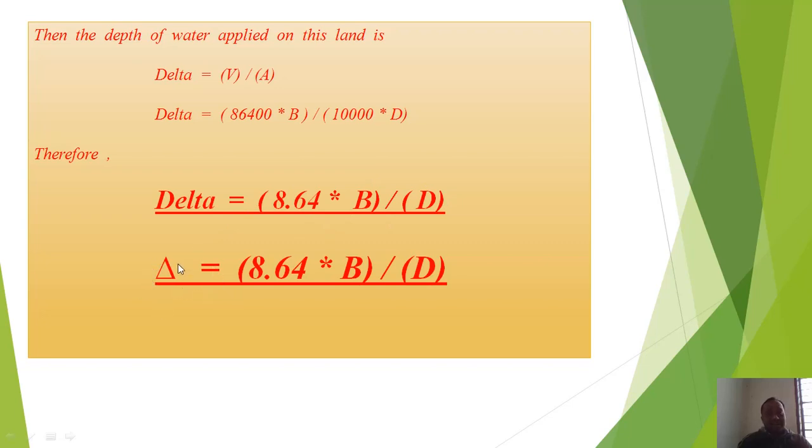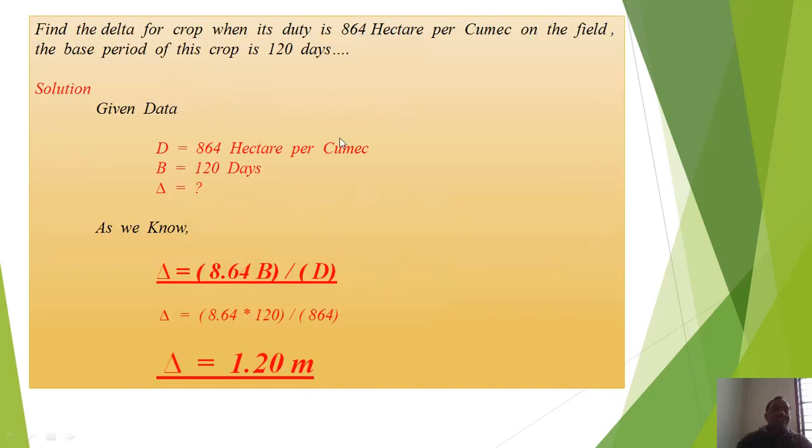Now we will see one small example. Find the delta for crop when its duty is 864 hectare per cumec on the field. The base period of this crop is 120 days.